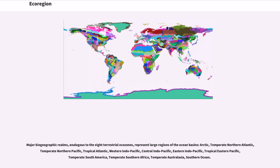Major biogeographic realms, analogous to the eight terrestrial ecozones, represent large regions of the ocean basins: Arctic, Temperate Northern Atlantic, Temperate Northern Pacific, Tropical Atlantic, Western Indo-Pacific, Central Indo-Pacific, Eastern Indo-Pacific, Tropical Eastern Pacific, Temperate South America, Temperate Southern Africa, Temperate Australasia, Southern Ocean.